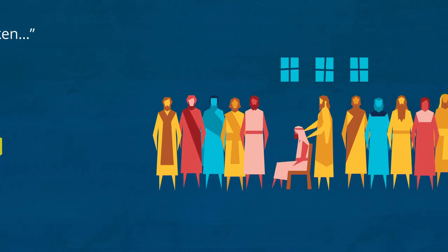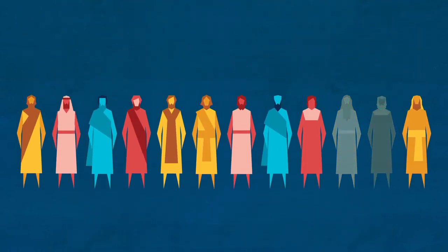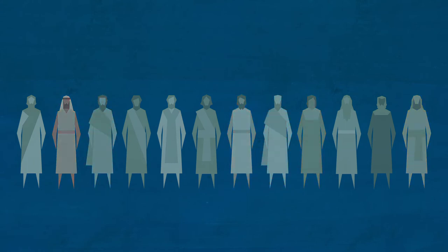Joseph would go on to learn that Christ's true church, the one with his authority that he founded during his time on earth, had been lost from the earth after the martyrdom of the original church's leaders.